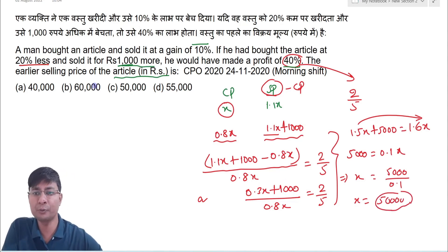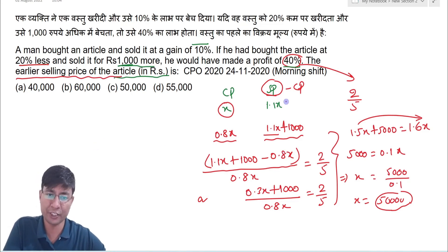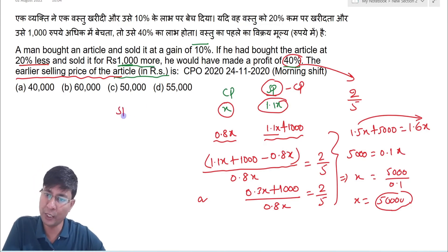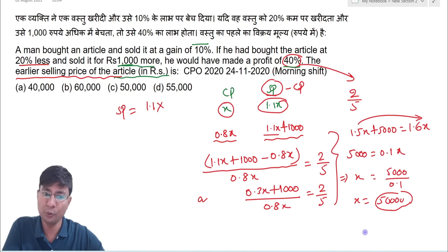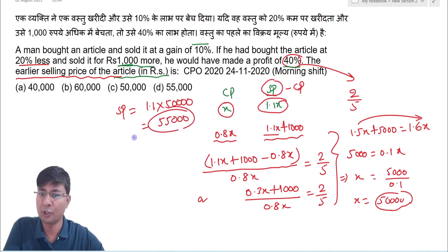The question asks for the earlier selling price of the article. The first selling price was 1.1x, so 1.1 × 50,000 = ₹55,000. The answer is option D.